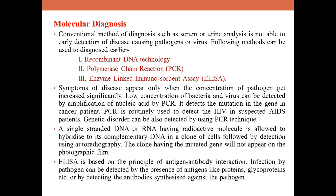Probes — single-stranded DNA or RNA tagged with a radioactive molecule — can hybridize to complementary DNA in a clone of cells, detected by autoradiography. ELISA is based on antigen-antibody interaction and can detect minute quantities of antibodies or antigens. Types include direct ELISA, indirect ELISA, and sandwich ELISA. ELISA is widely used for identification of HIV and detection of many bacterial diseases.